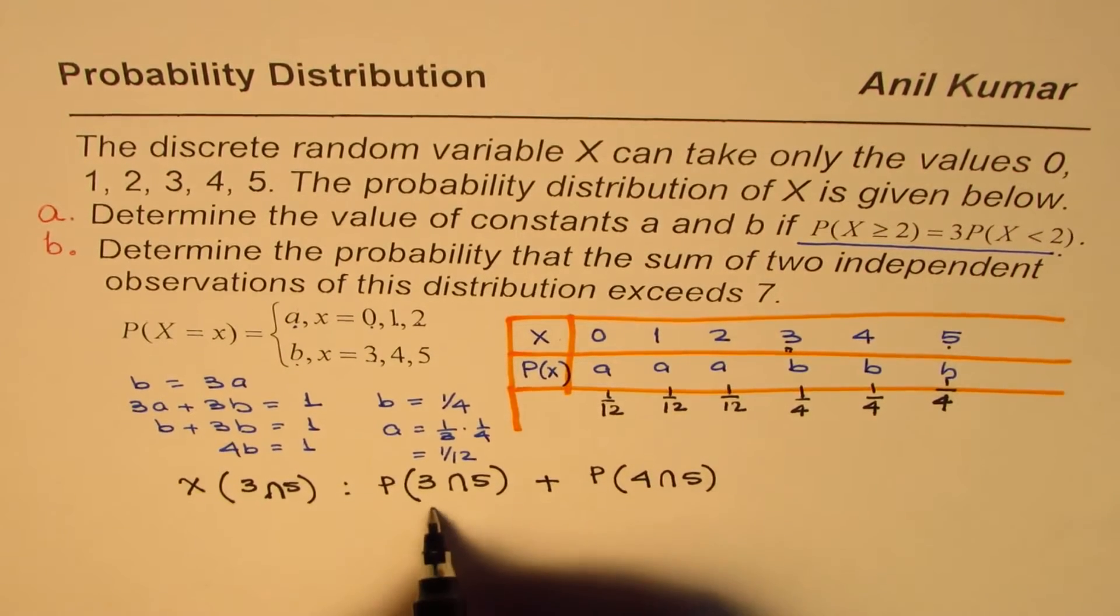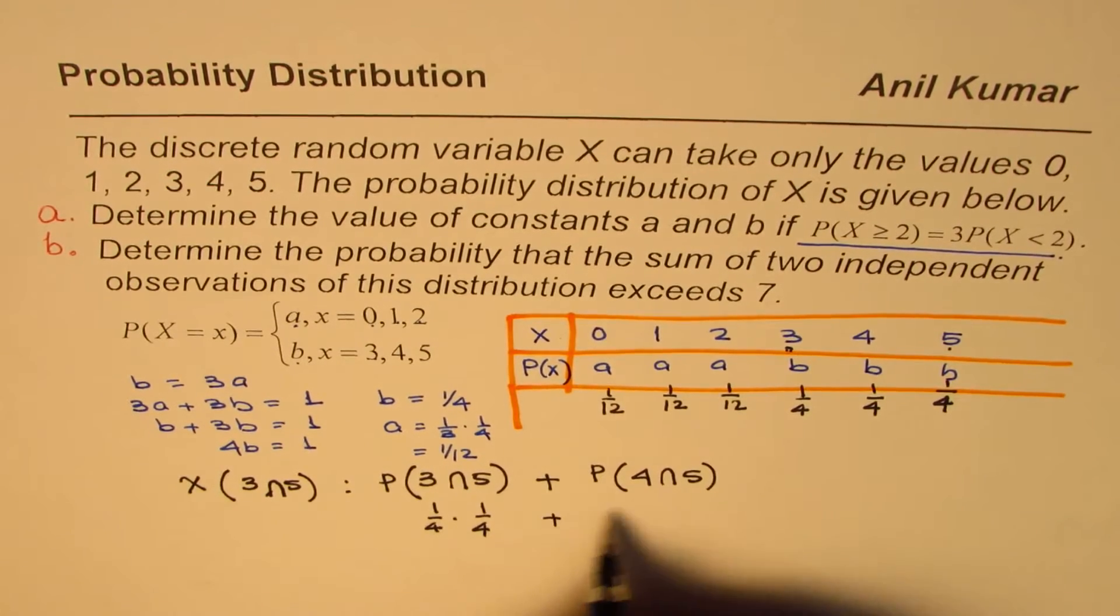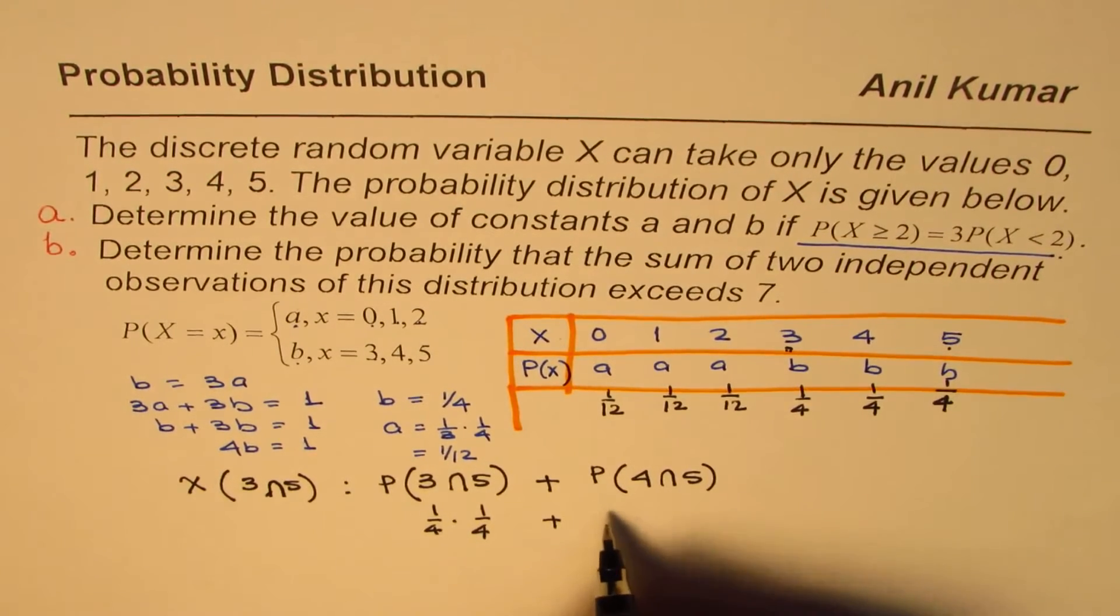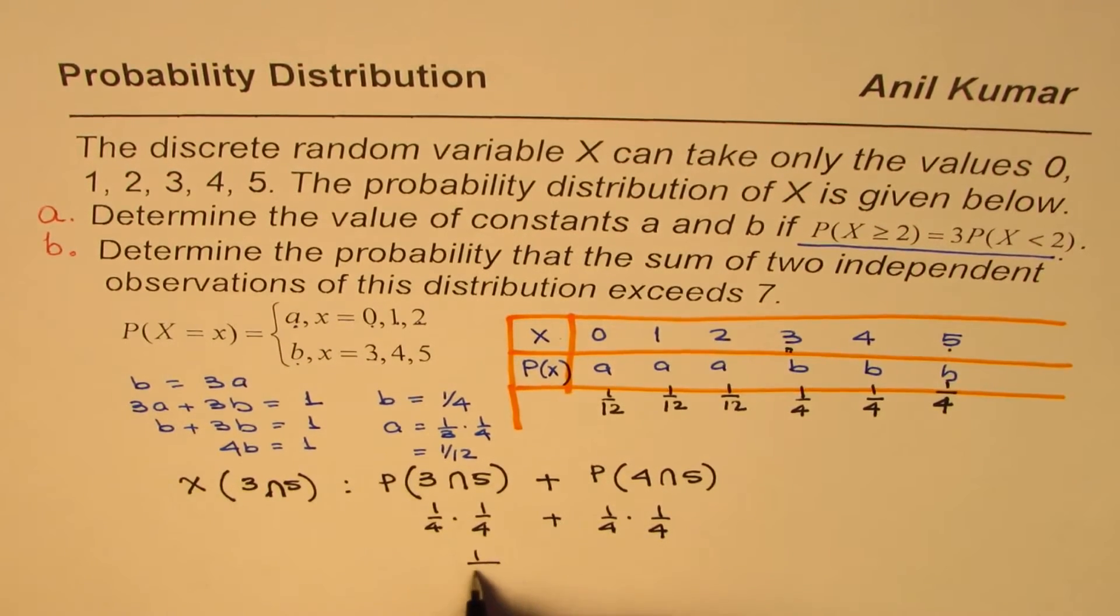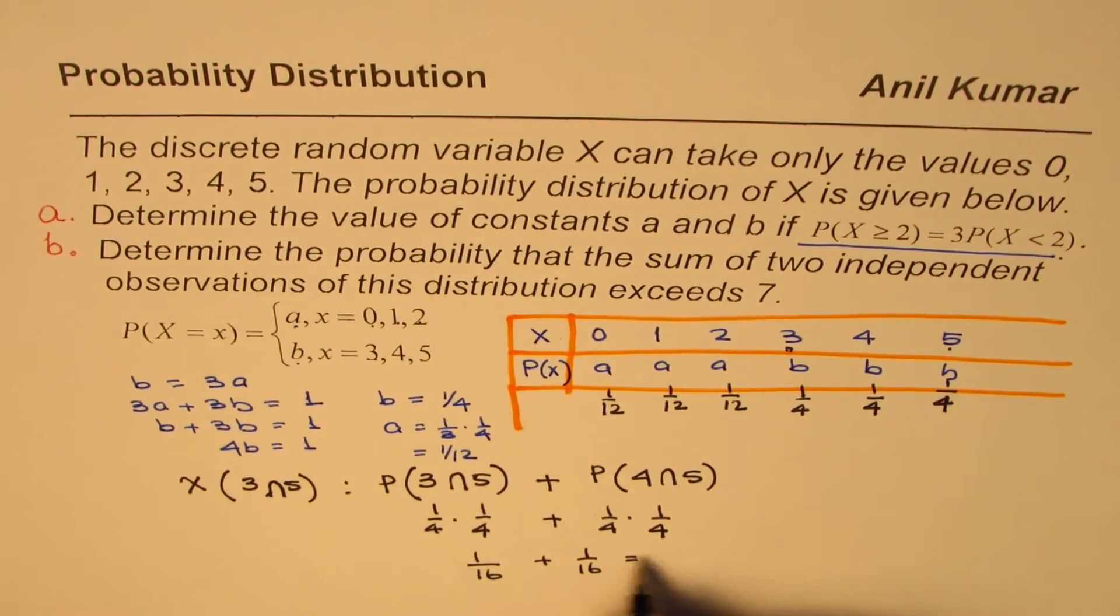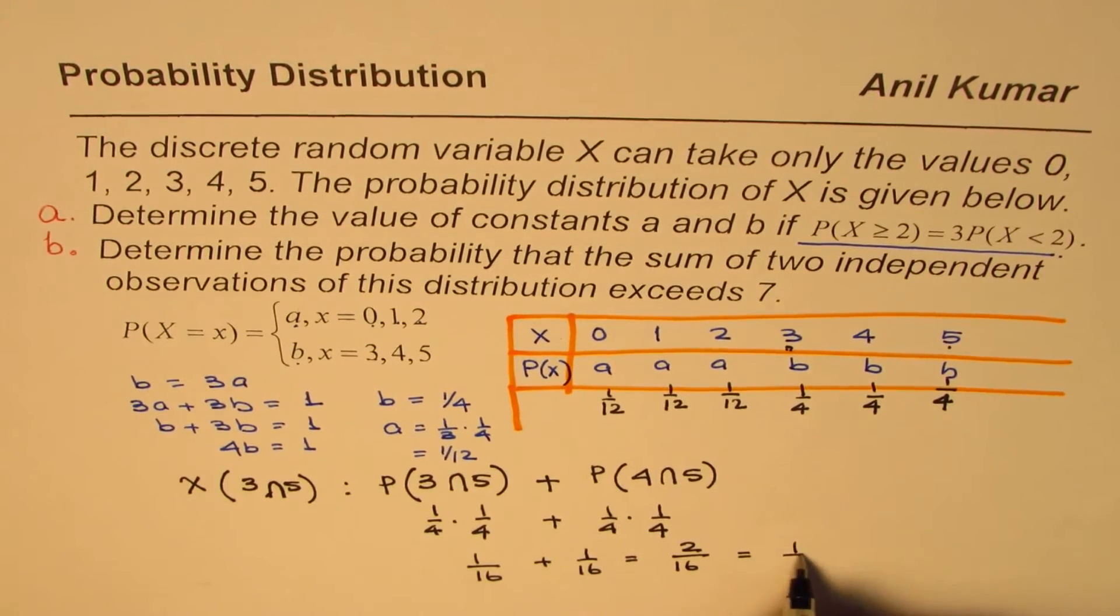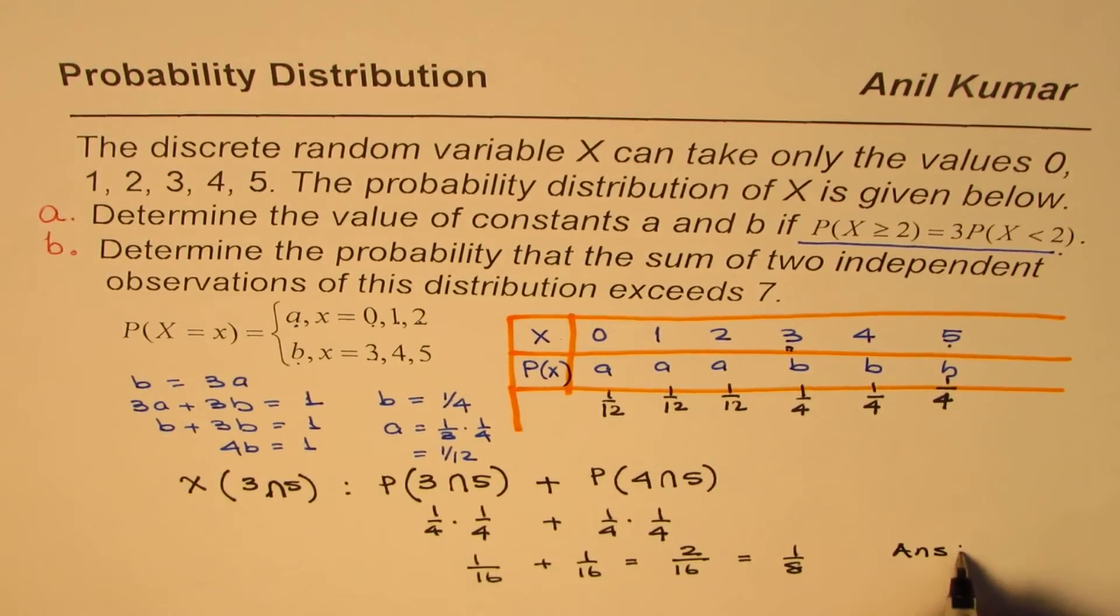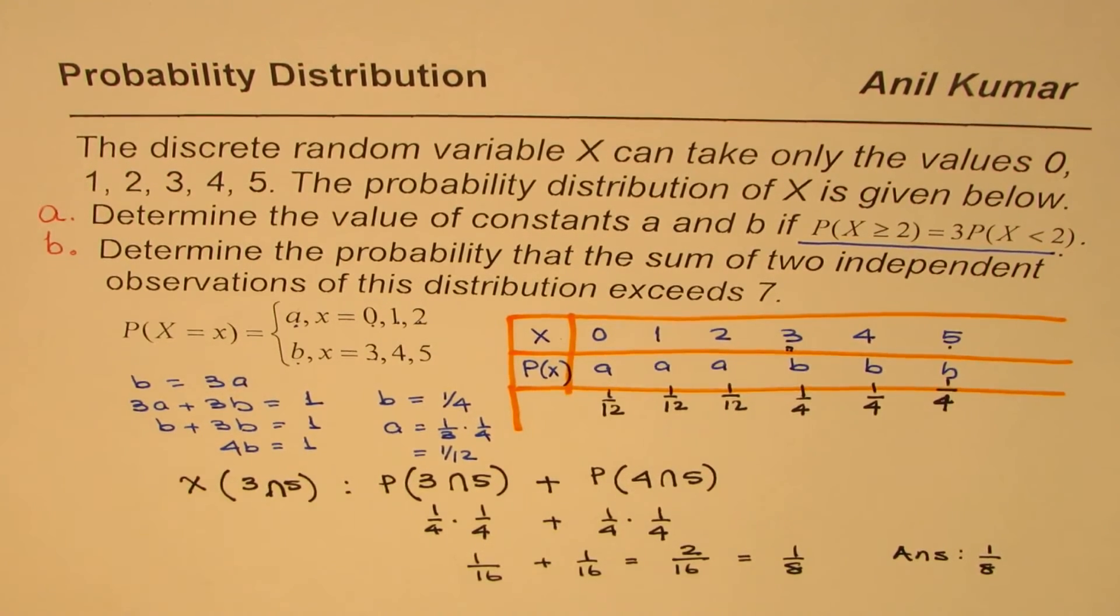So it is 1 over 4 times, this is also 1 over 4, plus 4 and 5 will be 1 over 4 times 1 over 4. So that gives you 1 over 16 plus 1 over 16 or 2 over 16, 2 over 16 or 1 over 8. So the answer is, probability is 1 over 8. So that is how we can actually answer this question.